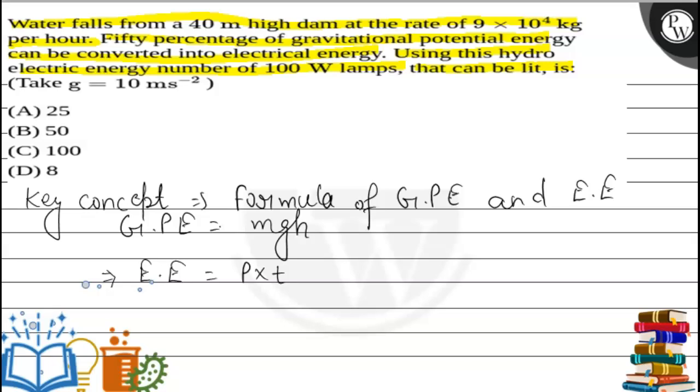In this question, a tank is placed at a height of 40 meters from the ground. From this tank, the water falls at the rate of 9×10^4 kg per hour.